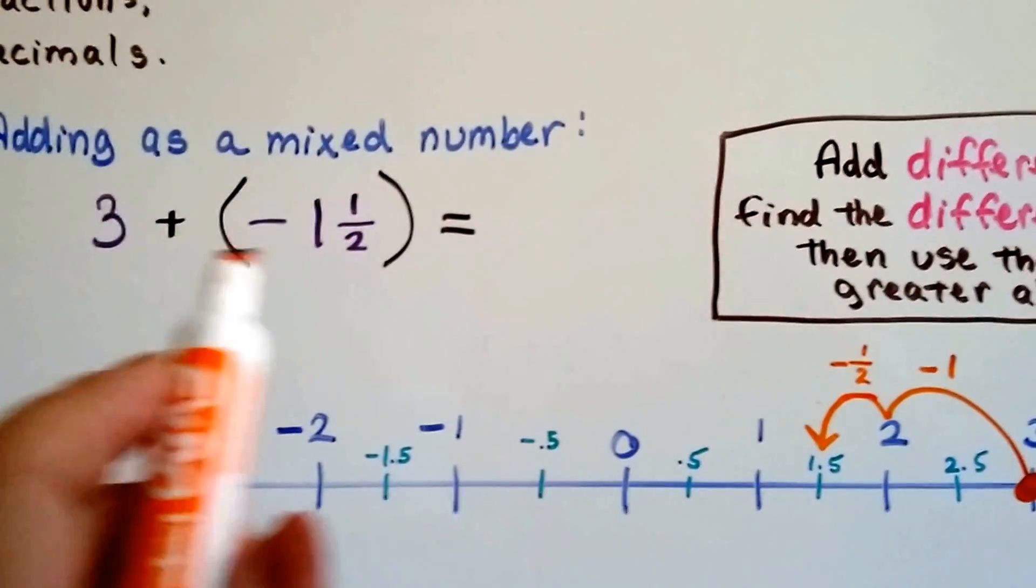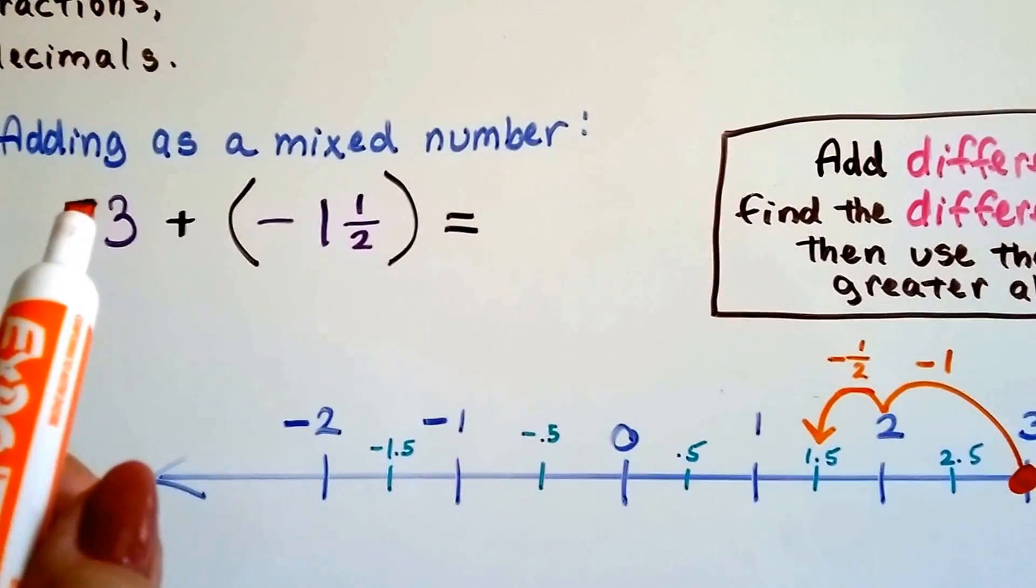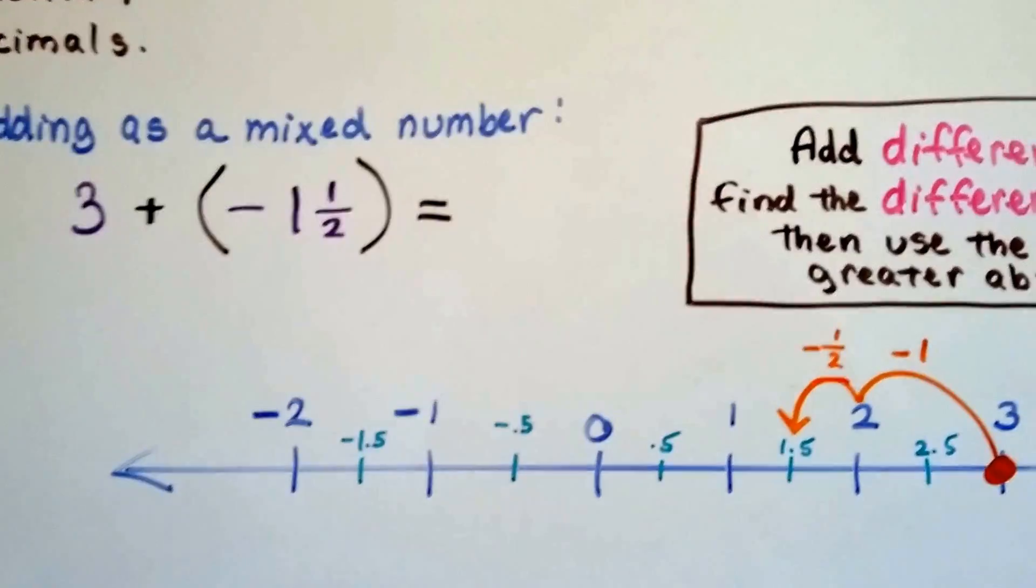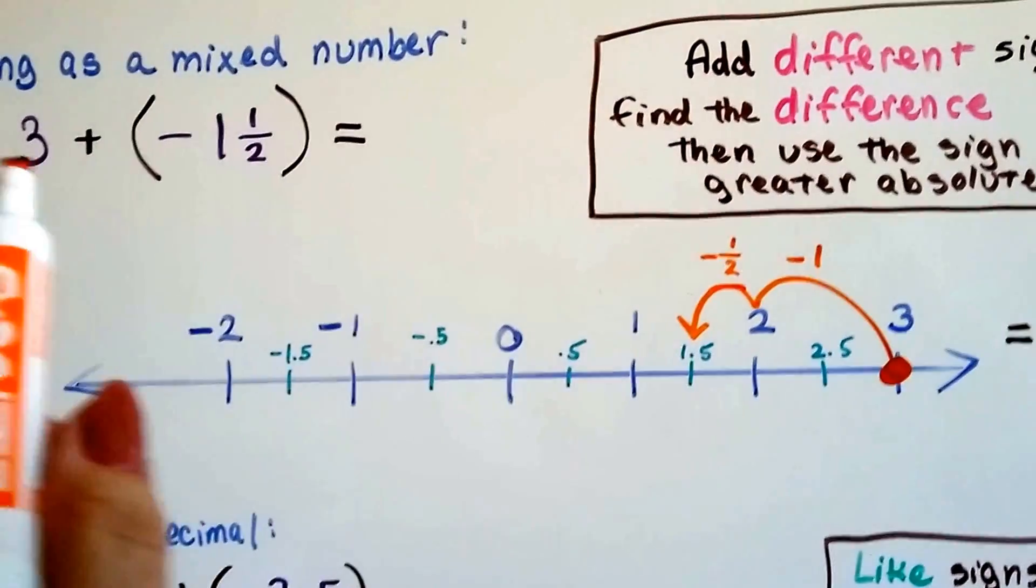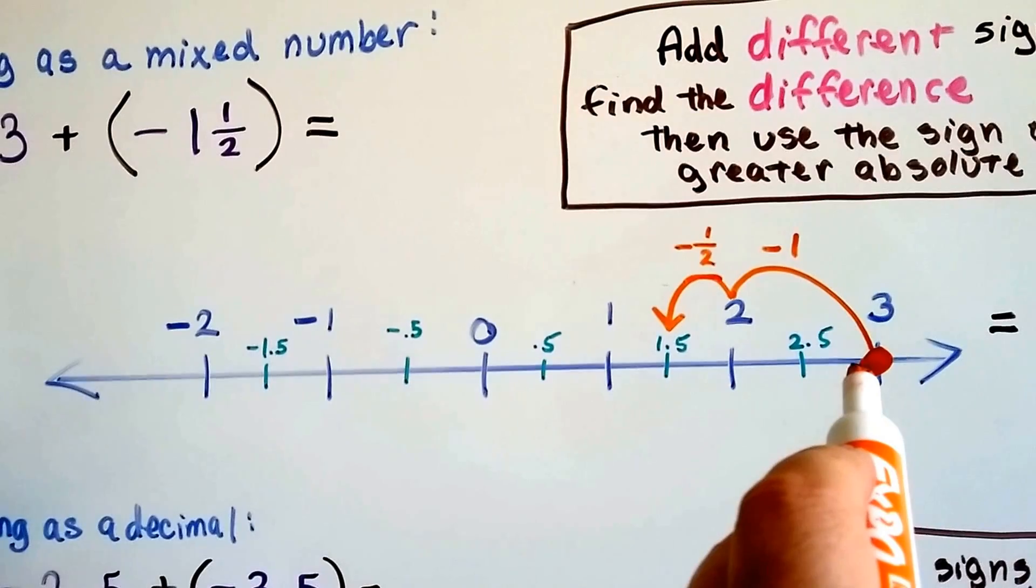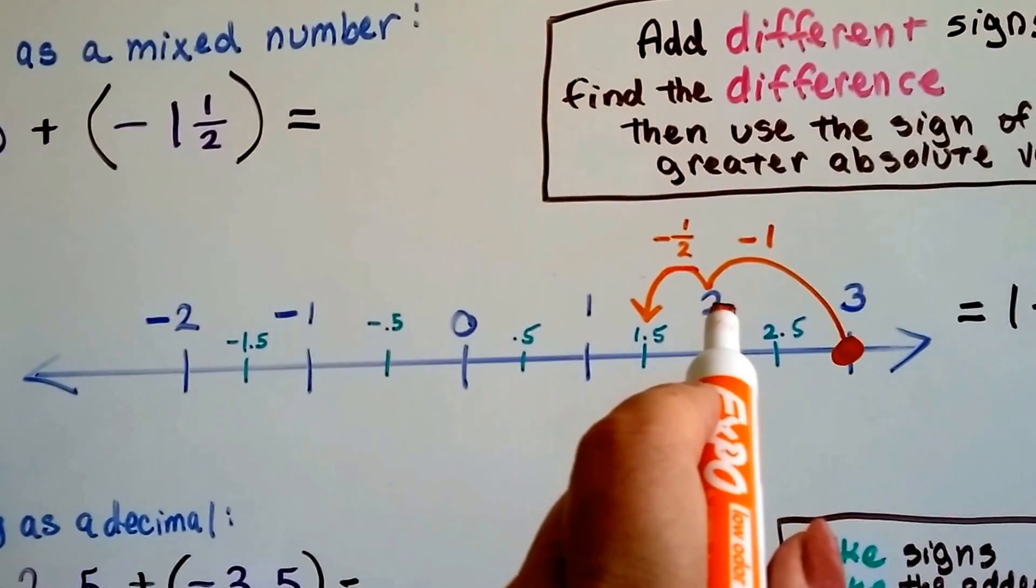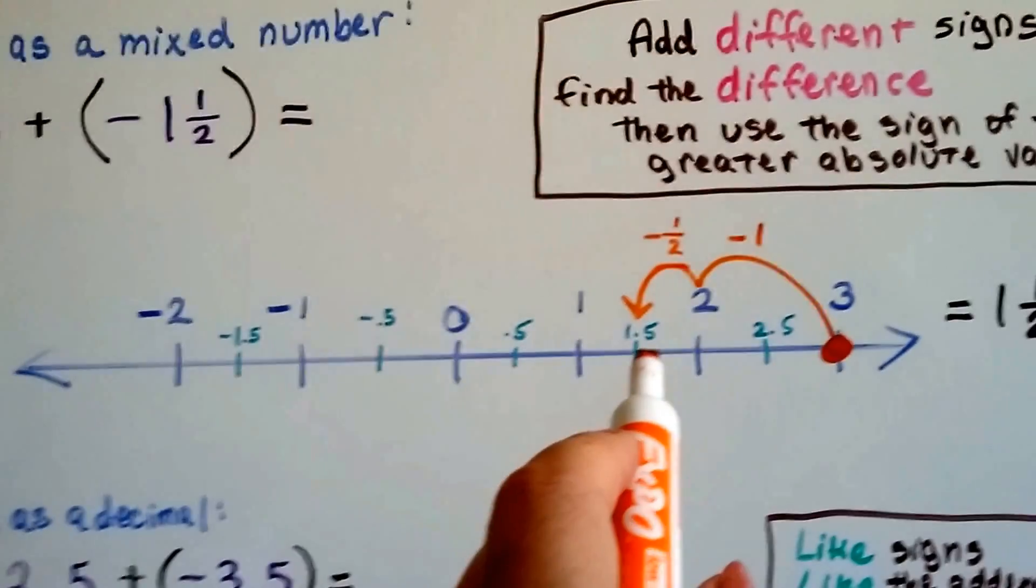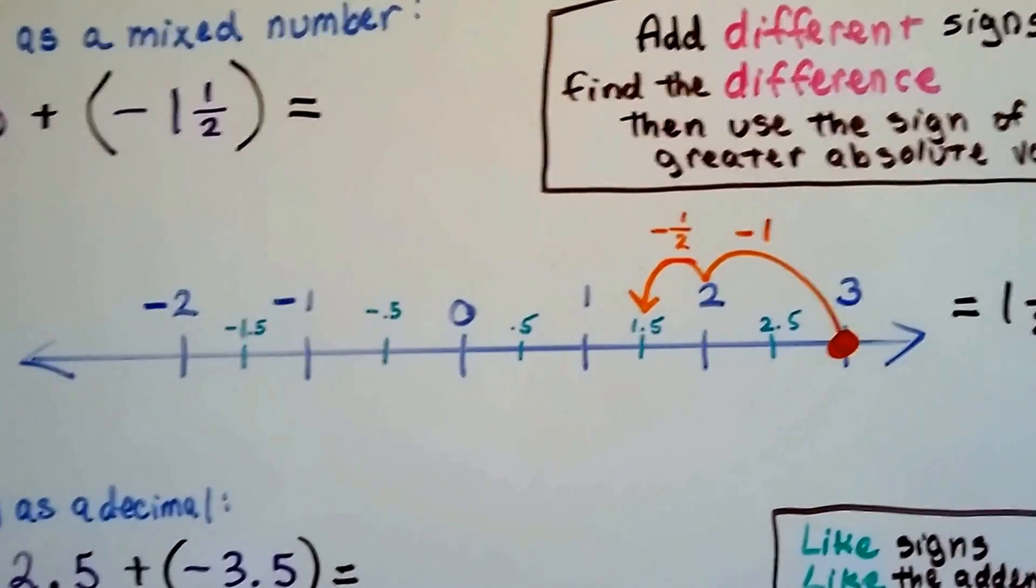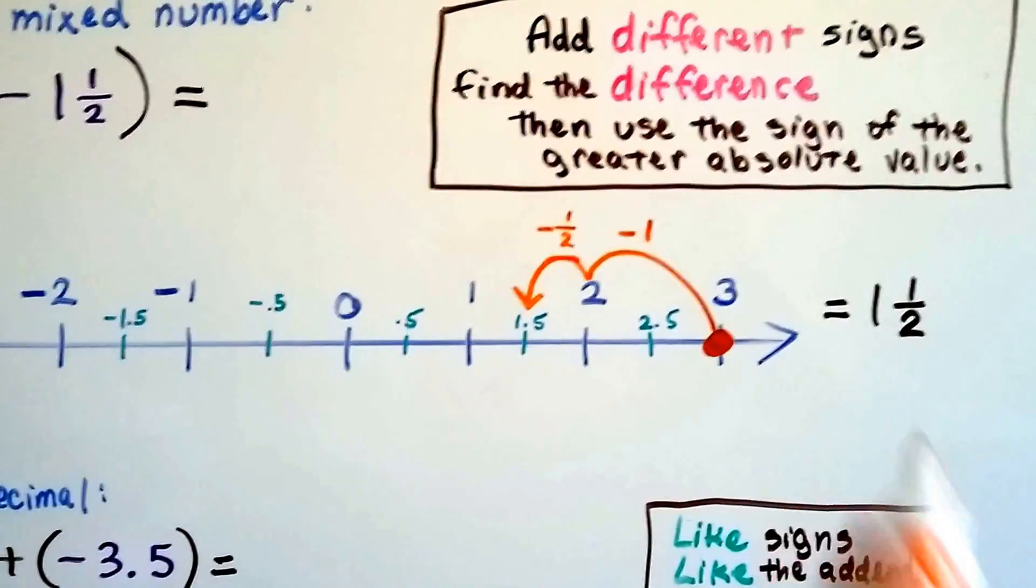So which one has a bigger absolute value? Which one's farther from 0 on a number line? The 3 is, and it's positive, so our answer's going to be positive. So on a number line, if we're at 3 right here, here's the 0, so we're on the positive 3 side, and we take away 1 and a half. We take away 1, that puts us at 2, and we take away the half, and that puts us at 1 and a half, and we know it's positive. Our answer's 1 and a half.